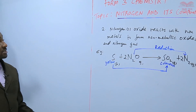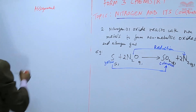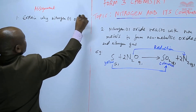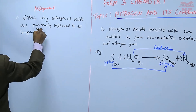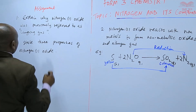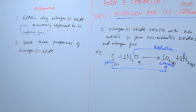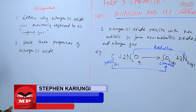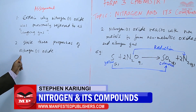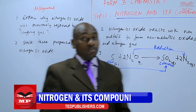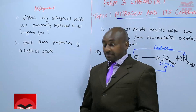An assignment based on that: question one, explain why nitrogen one oxide was previously referred to as laughing gas. Question two, state three properties of nitrogen one oxide. We are going to stop there until next time — goodbye.